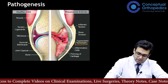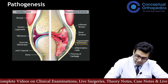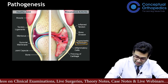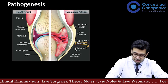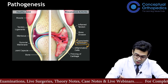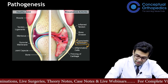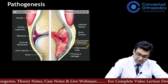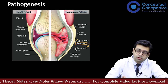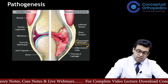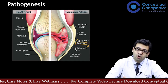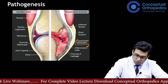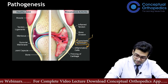The synovium is inflamed and hyperplastic in rheumatoid arthritis. It gets started with inflammatory cells and becomes hyperplastic. When it becomes hyperplastic and inflamed, it starts secreting excess synovial fluid, which leads to distension, swelling, and warmth of the joint. This hyperplastic synovium is known as pannus.